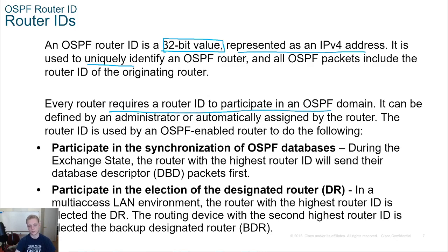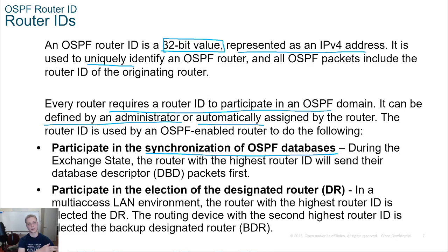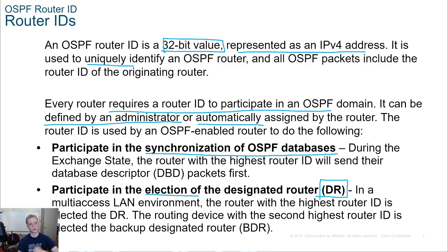The router ID is used to uniquely identify an OSPF router - it must be 100% unique. It's required to participate in OSPF. If we don't manually assign it, it can be automatically assigned by the router. It serves two purposes: as a unique identifier for synchronizing databases, and as a tiebreaker in the DR election if priorities are the same. Remember, in layer 3 technologies higher priority is better, whereas in layer 2 protocols the opposite is true - higher numbers are worse and lower numbers are better.